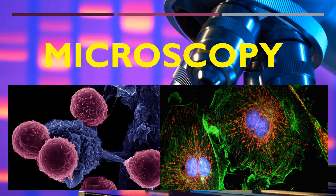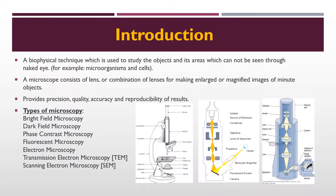In this presentation I will talk about one of the most important biophysical techniques required in biotechnology industry and research — microscopy. This presentation will cover the basics of microscopy, types of microscopy, and their uses. Microscopy is a biophysical technique used to study objects and areas which cannot be seen through the naked eye, for example microorganisms like bacteria and yeast, and cells like cancer cells and blood cells.